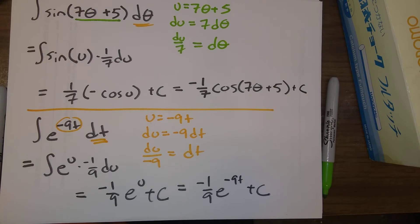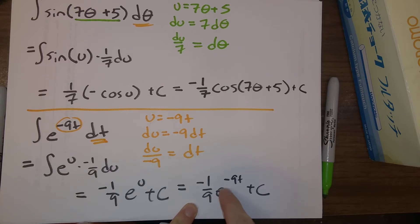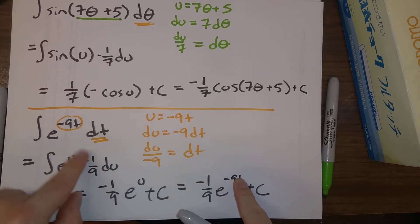Of course, in both of these, we can and should think about just checking. You know, if you take the derivative of this, multiply by minus 9, so you just get e to the minus 9t, what we started with.